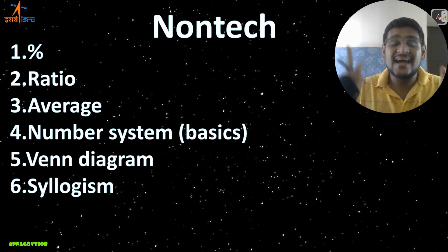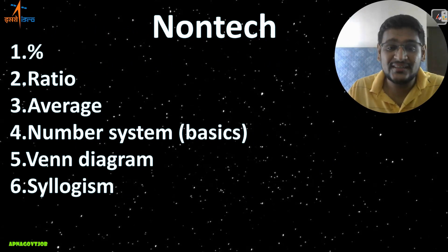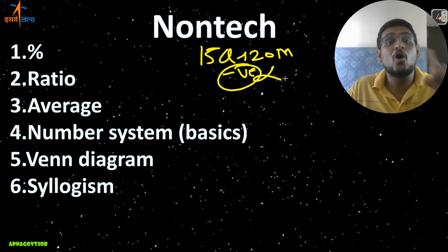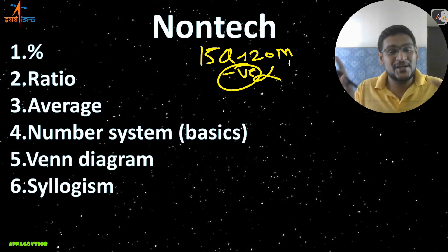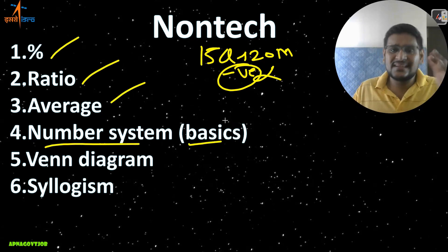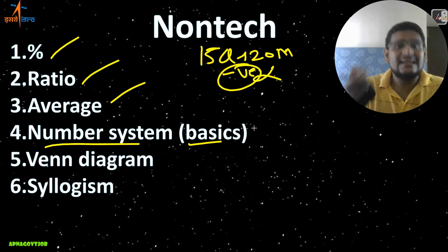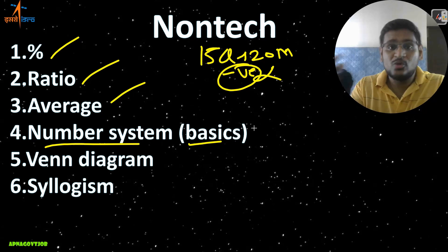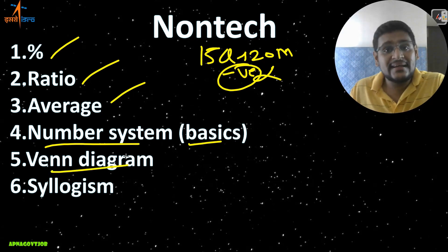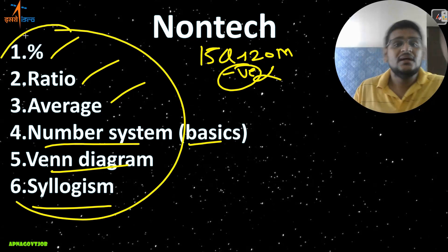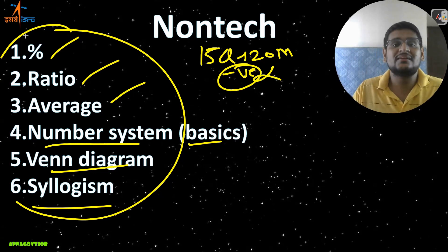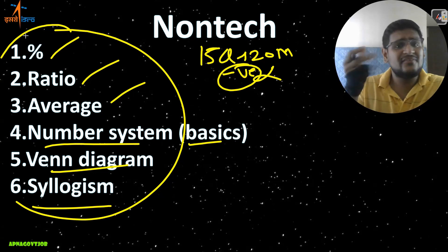For the first time in the history of the ISRO exam, they are introducing a non-technical portion, from which you will get 15 questions for 20 marks. The best part is there is no negative marking for this section — it is common for all branches. In Phase 1, you will start: percentage, basics, ratio, average, number system basics, simplification, basic rules like divisibility rule, power rules, Venn diagram, and syllogism. These six chapters we will cover in Phase 1. Resources: in the Master Set Pack (MSP), notes are already available; you can also use R.S. Aggarwal for good preparation.